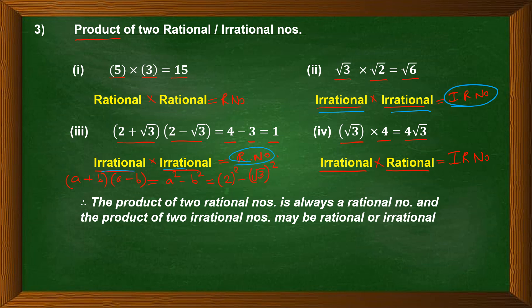The product of two rational numbers is always a rational number, but the product of two irrational numbers may be rational or irrational. We have to simplify and then determine whether the result is rational or irrational.